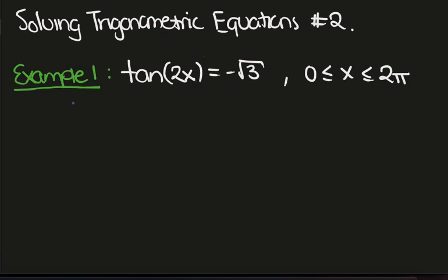So what we're going to do is proceed as normal. We'll have the reference angle that's found using the normal triangle 1, 2, root 3, pi on 3, pi on 6. Tan is opposite over adjacent, so the reference angle is pi on 3.